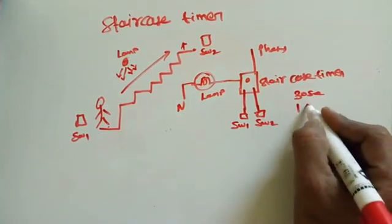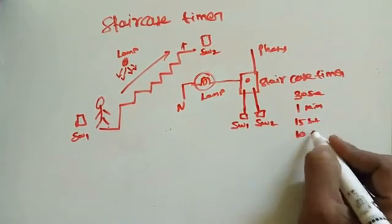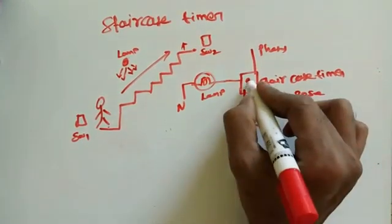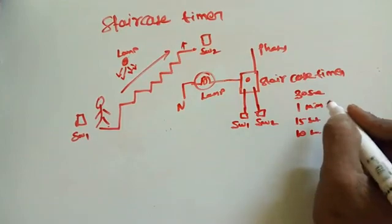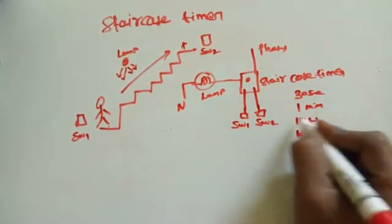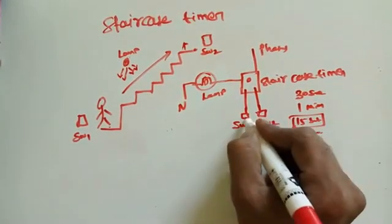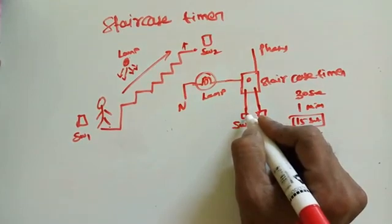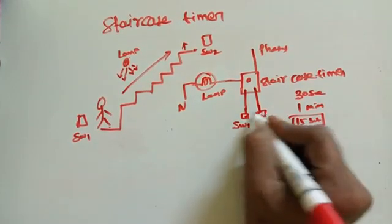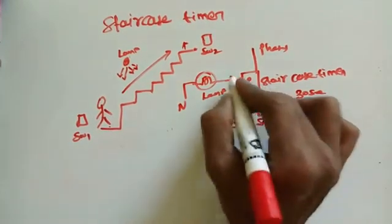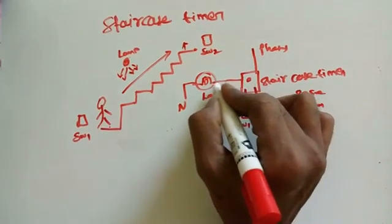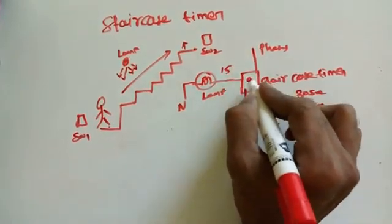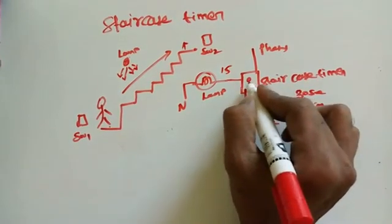One minute, or less than 15 seconds or 10 seconds - like this we set the knob. By default we set for 15 seconds. We switch on - press the switch one time here or here. Then this staircase timer gives supply to this lamp for 15 seconds.